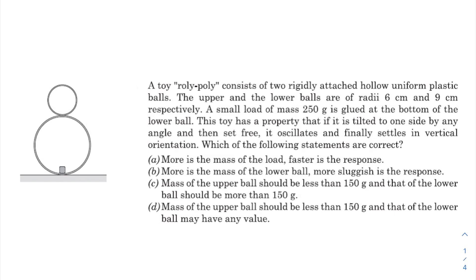So let us go through the question very quickly. A toy roly-poly consists of two rigidly attached hollow uniform plastic balls. The upper and the lower balls are of radii 6 cm and 9 cm respectively. A small load of mass 250 grams is glued at the bottom of the lower ball. This toy has a property that if it is tilted to one side by any angle and then set free, it oscillates and finally settles in vertical orientation. Which of the following statements are correct?